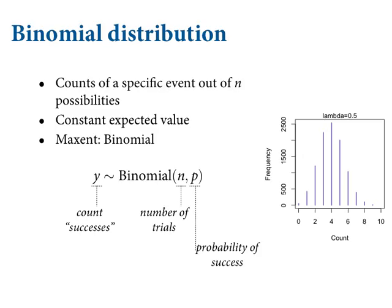Let's actually move into doing some good work here. We're going to work with the binomial distribution and model some counts of events — this is like the globe tossing thing from the beginning of the course. What is the binomial distribution for? It's counts of some specific event out of N possible trials. N is the maximum value it could take and zero is the minimum. There's some constant expected value conditional on the predictor variables. The binomial assumes that for any specific set of predictor variables there's a constant expected value, and under those conditions the maximum entropy distribution is binomial — the distribution you get by counting the paths through the garden of forking data.